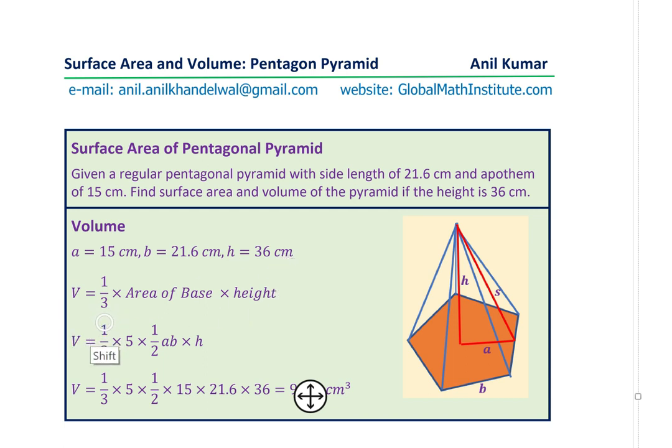Substituting the values into the formula, which is one third of area of the base into height. One third times area of the base is five times half AB, and then multiplied by height.